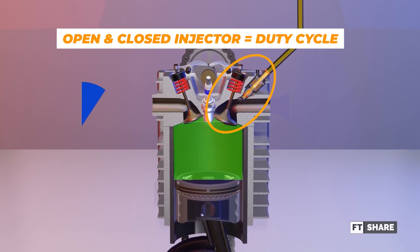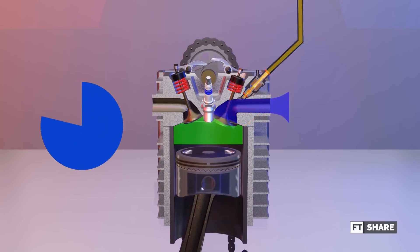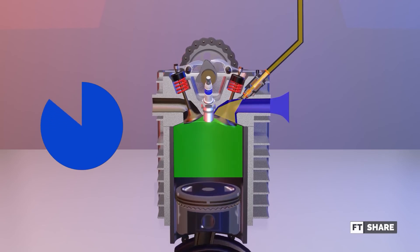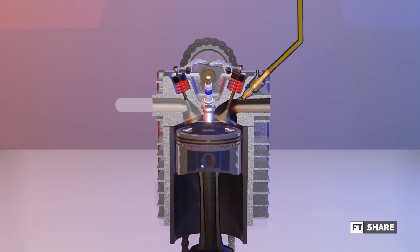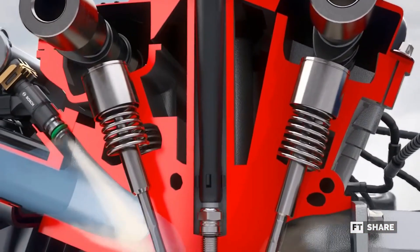So, the percentage of injector opening will be calculated as the duty cycle percentage, which is based on one power cycle in a four-stroke engine. This means that the duty cycle at different RPMs will also result in different pulse widths.